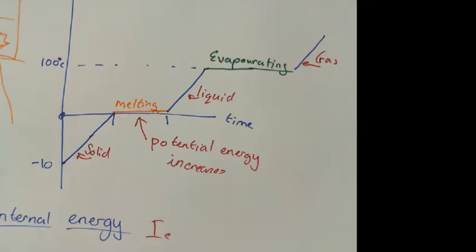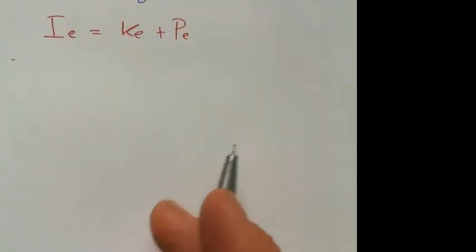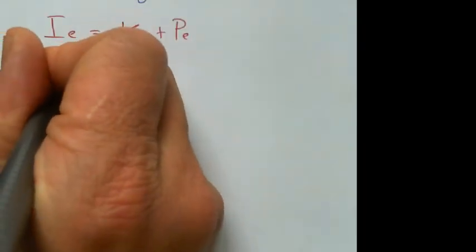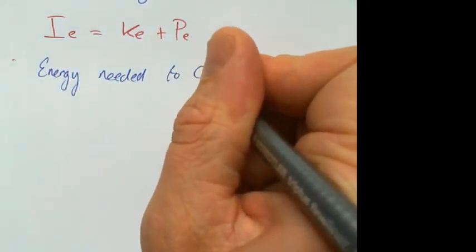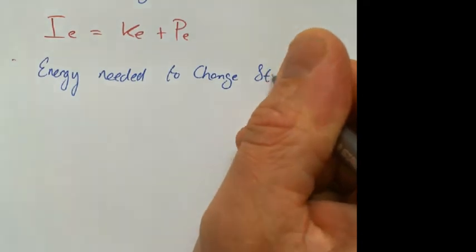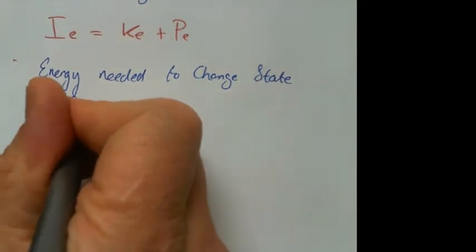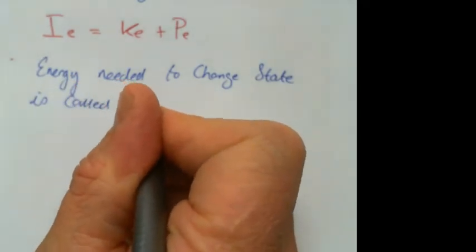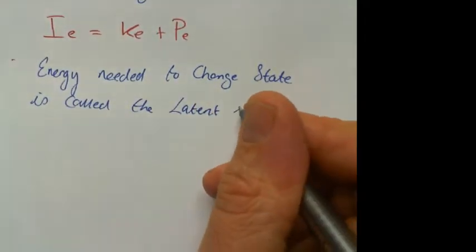And the amount of energy that it takes to change the state is called the latent energy. So energy needed to change the state is called the latent energy.